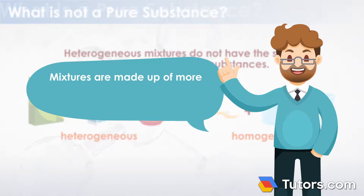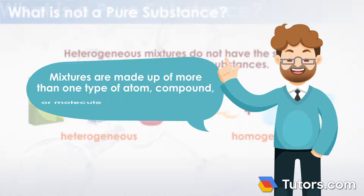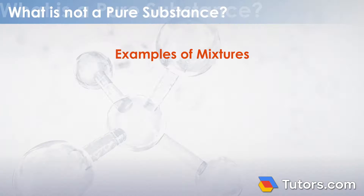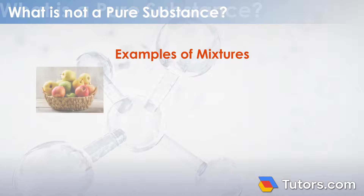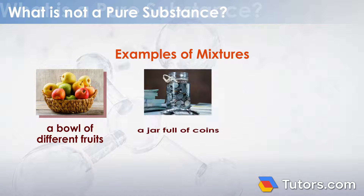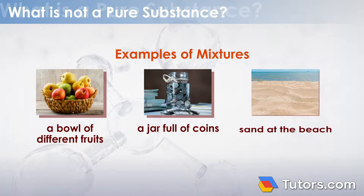Mixtures are made up of more than one type of atom, compound, or molecule, making them impure. Examples of mixtures are a bowl of different fruits, a jar full of coins, and sand at the beach.